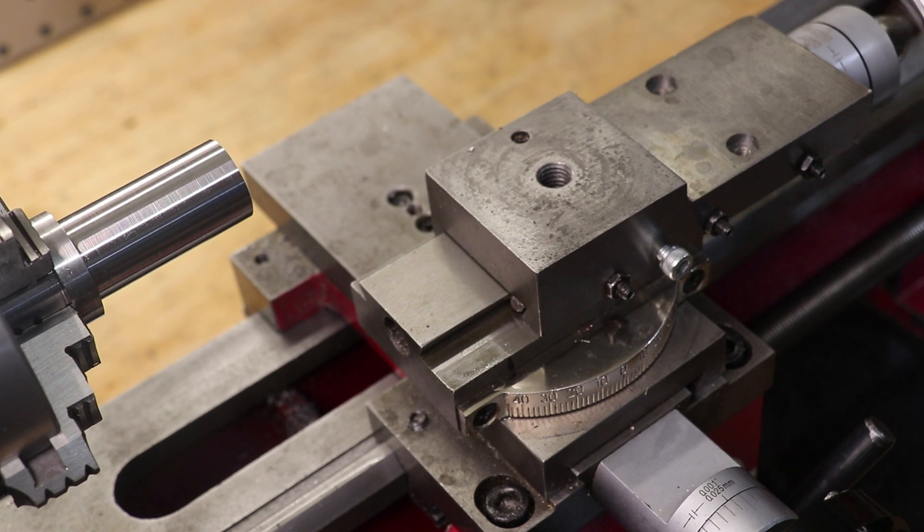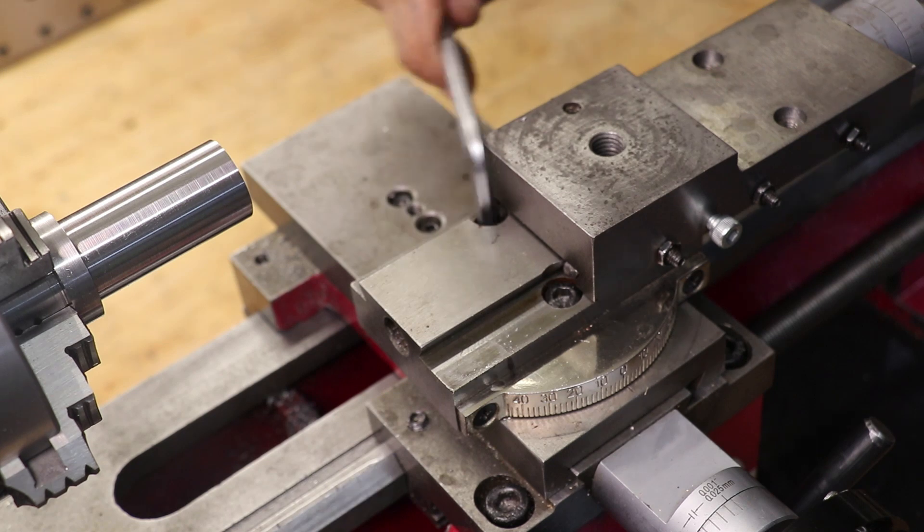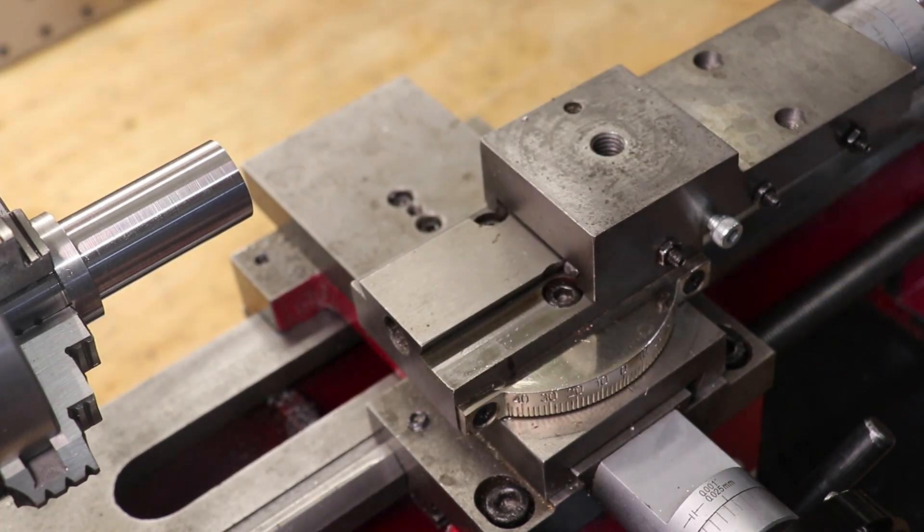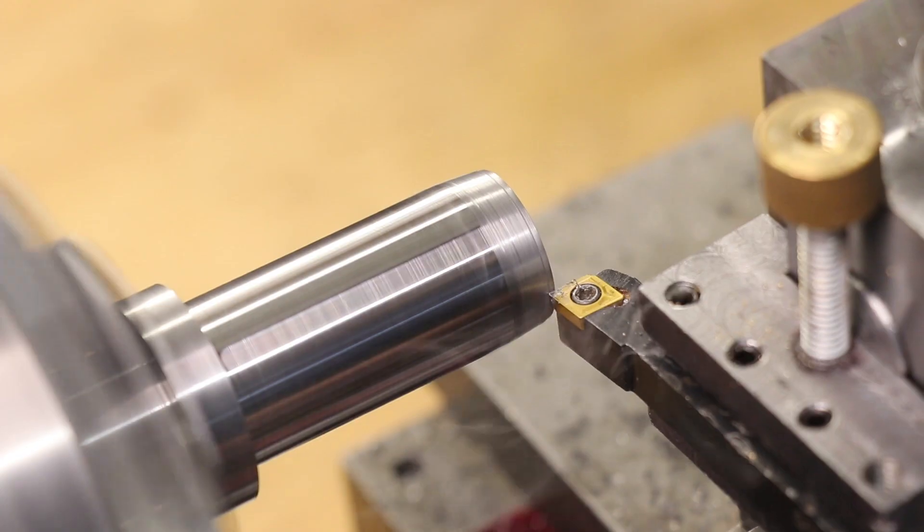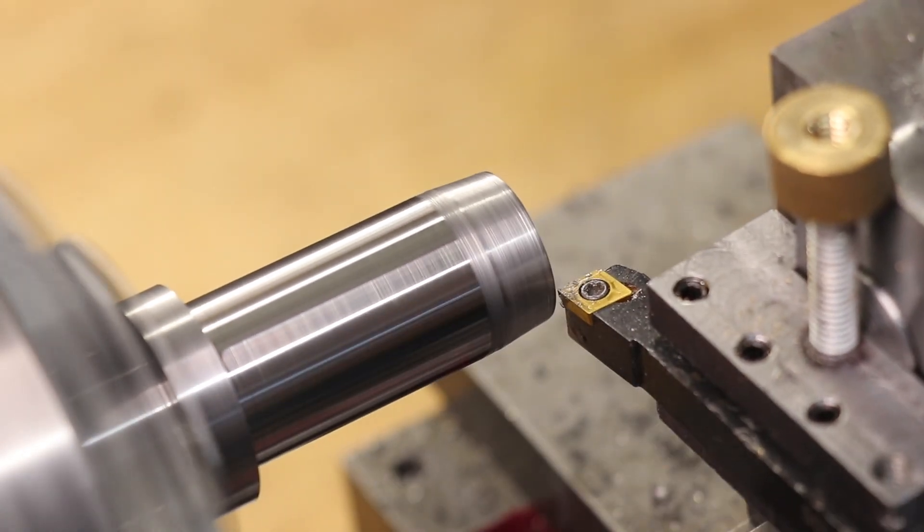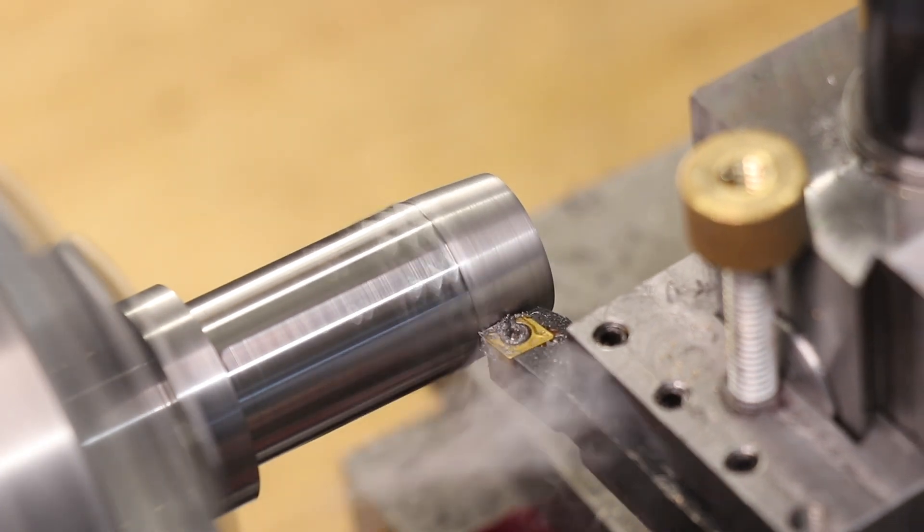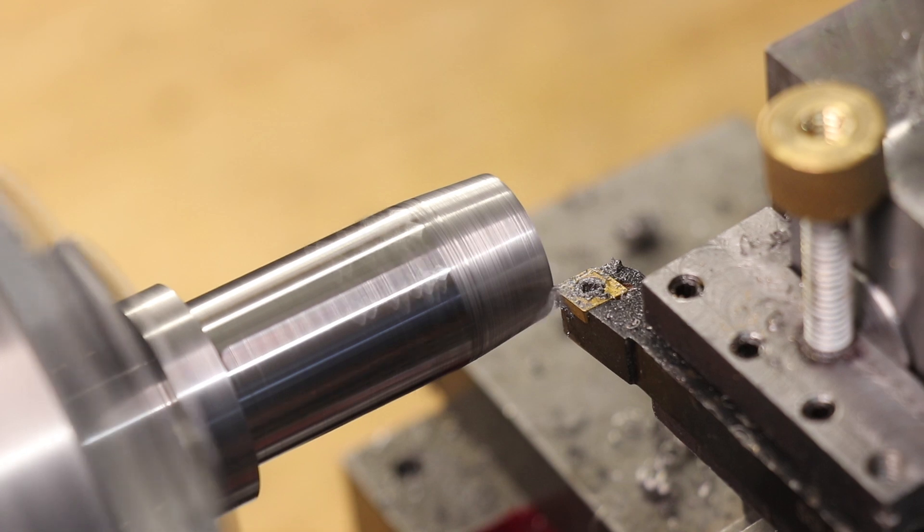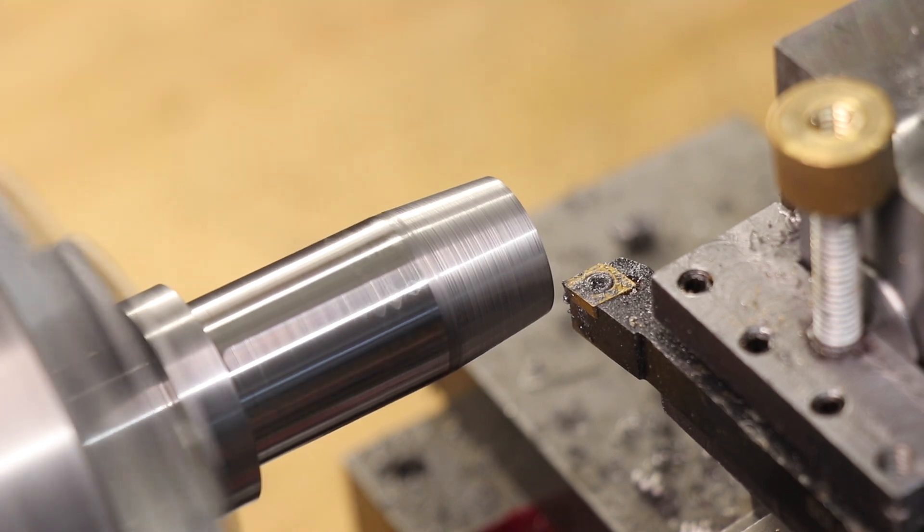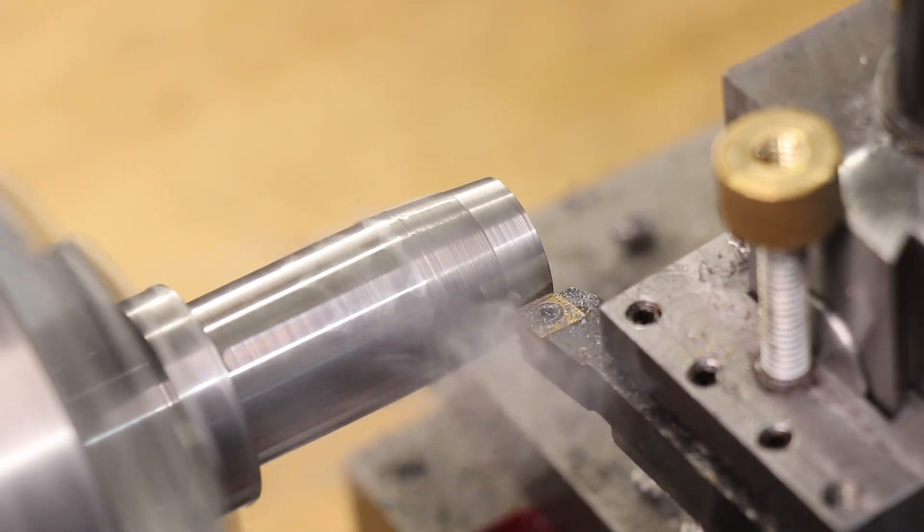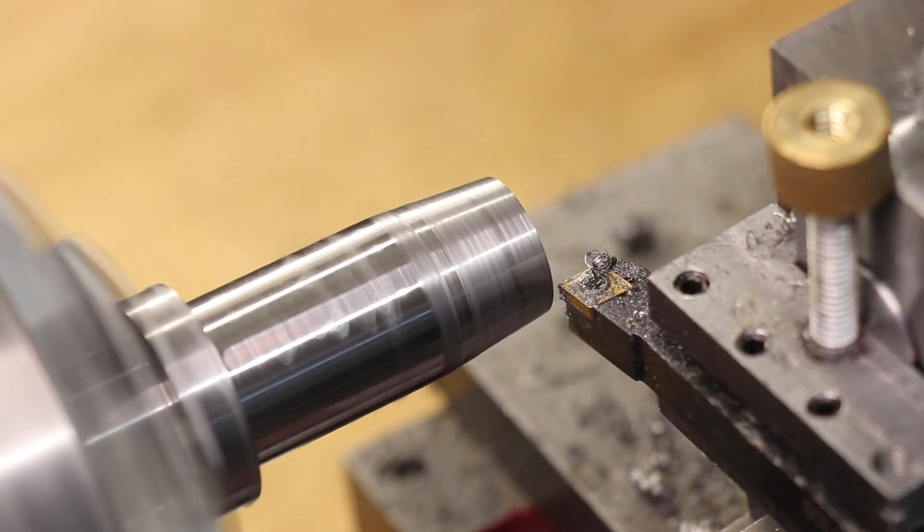With the hole hopefully done and to size I swapped out the cross slide to get the old compound back. I'll set the compound at a five degree angle and I'll turn down the holder. In doing this I'm going to get a lot more clearance out of the tool holder. In fact there isn't any other tool holder that I have that has this much clearance. In fact it's one of the reasons why these are really popular on five axis CNC machines.